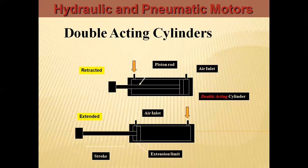For the return stroke, the valve needs to be arranged — we call these DCVs, directional control valves. When the DCV is altered, the input power supply connects to the second port and the output connects to the first port. The fluid enters towards port number two, and port number one is trapped to the reservoir in the case of hydraulics, or released to the atmosphere in the case of pneumatics. This pressure leads to the retraction stroke, moving the piston back to the compressed position. Double acting refers to both the forward stroke and return stroke of the piston arrangement.